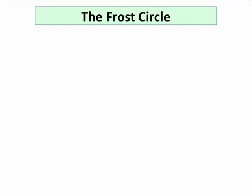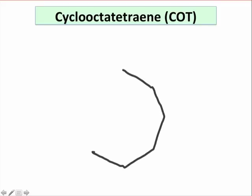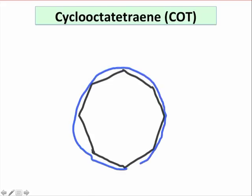Let's look at cyclooctotetraene, benzene's eight-membered cousin, as another example. I'll call it COT from here on out. First, lay down an octagon with a vertex pointing downward. Inscribe the octagon in a circle and draw energy levels at each vertex.